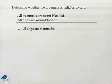In our next example, we're going to look at an argument where we're required to use Euler diagrams to determine whether the argument is valid or invalid. All mammals are warm-blooded. All dogs are warm-blooded. Therefore, all dogs are mammals.